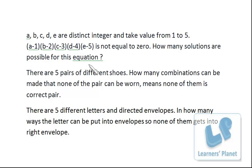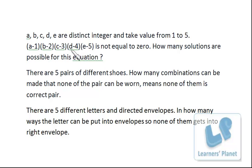Here, A, B, C, D, E are distinct integers and take values from 1 to 5. Five integers are there, they are taking 5 values, and these are distinct — meaning no repetition should be there. One value can be assigned to one variable only. The condition is: (A−1)(B−2)(C−3)(D−4) is not equal to 0. How many solutions are possible for this equation?